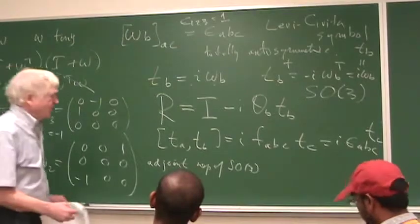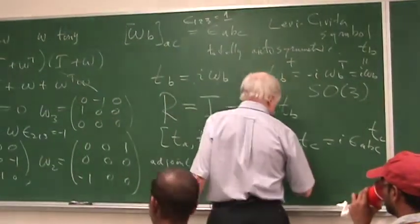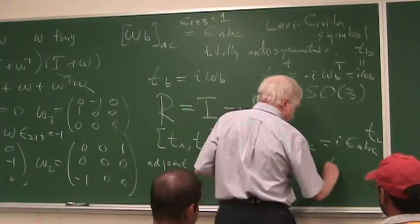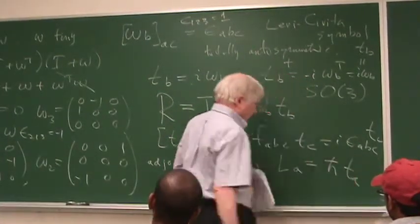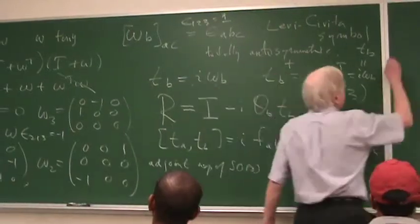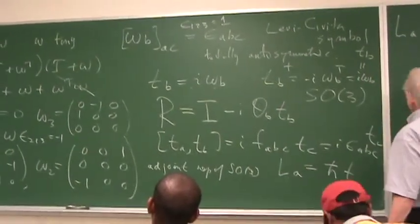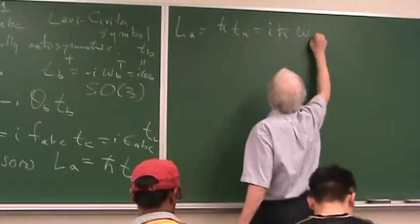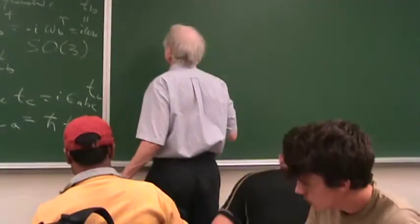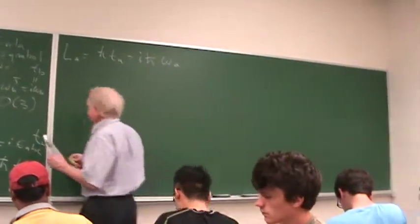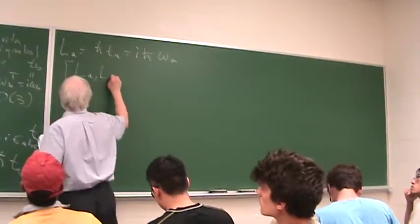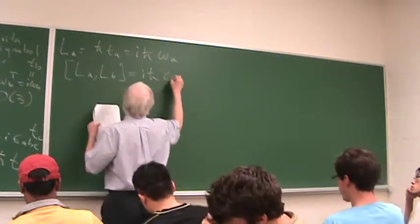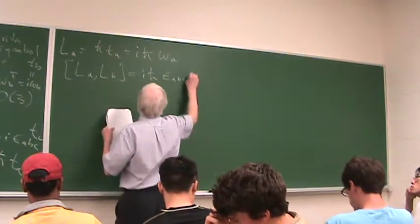In physics, what we do is we set the generators, the angular momentum, we say, are h-bar times T_A. So, L_A is h-bar times T_A, which is I h-bar times omega_A.